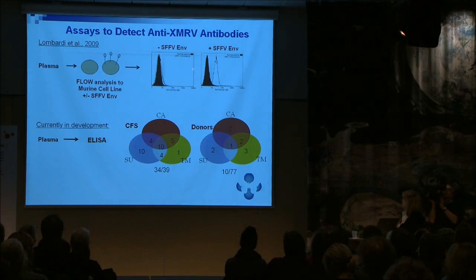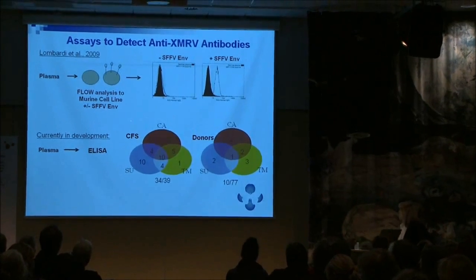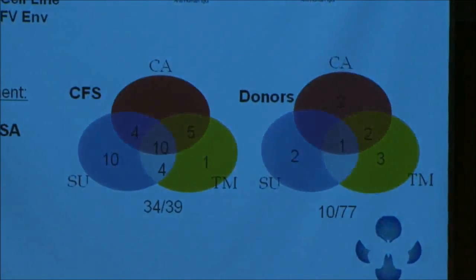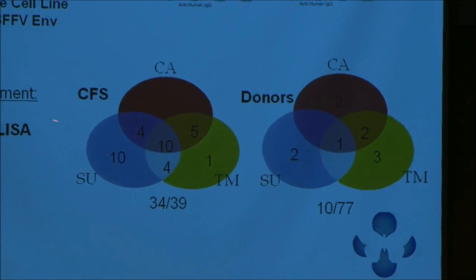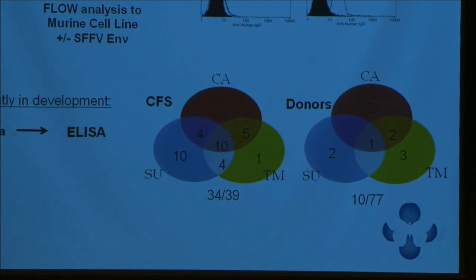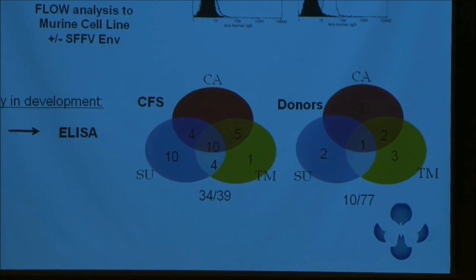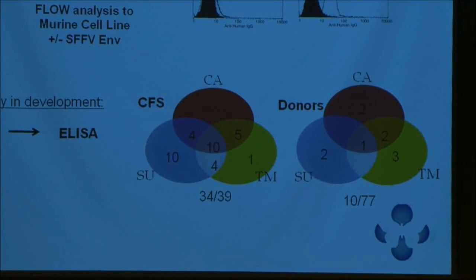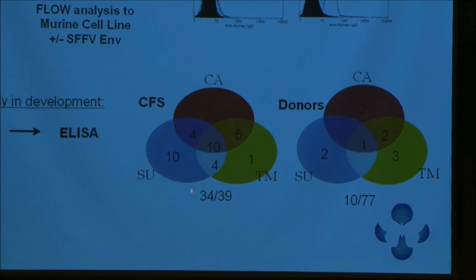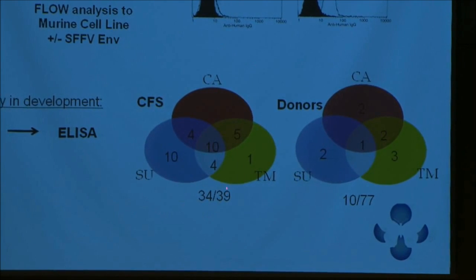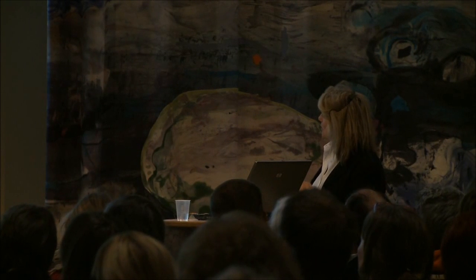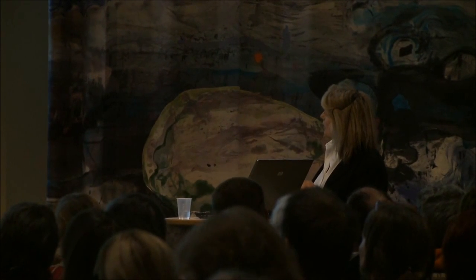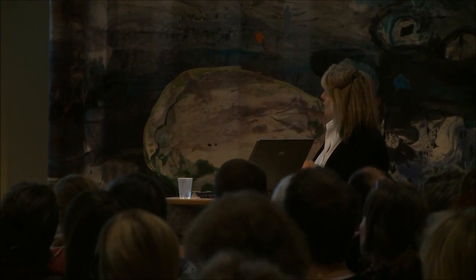Because this is a cumbersome cell-based assay, we are currently developing a plate format ELISA where we can do this assay in 96 wells at a time, enabling much higher throughput to screen patient populations and the blood supply for incidence. When Rachel Bagney did this with a training set of 39 CFS patients, looking at surface unit, transmembrane unit, and capsid, you could see antibodies to all three viral proteins. The strongest, clearly immunodominant epitopes, are on the surface unit.